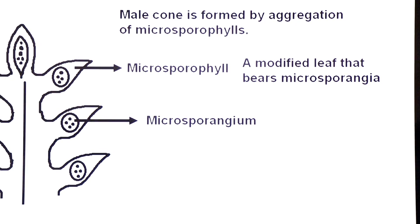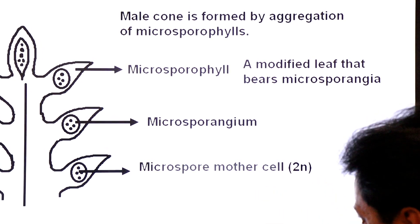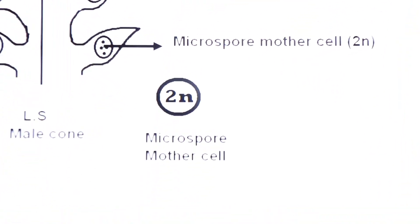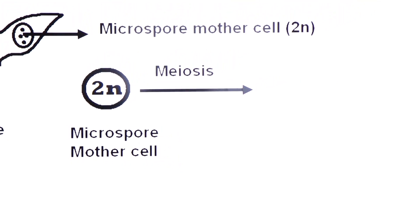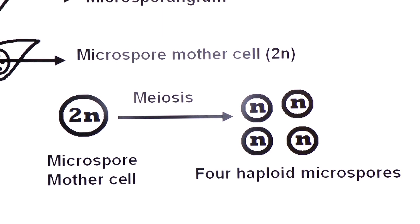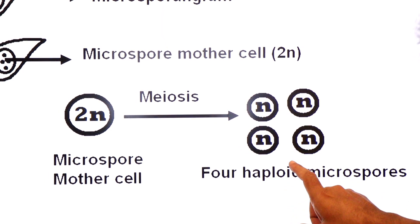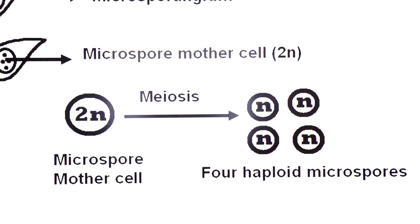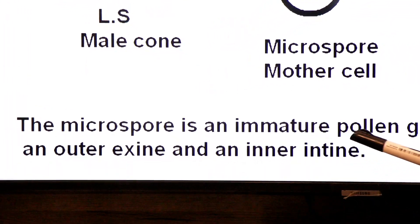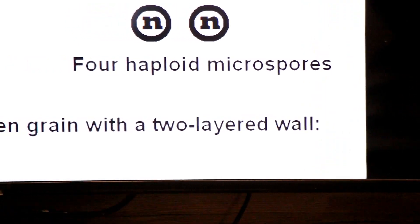The microspore mother cells divide by meiosis to produce four haploid microspores in a tetrad. The microspore is an immature pollen grain with a two-layered wall.